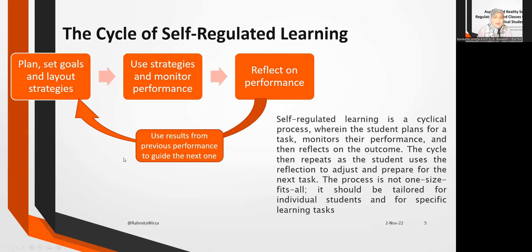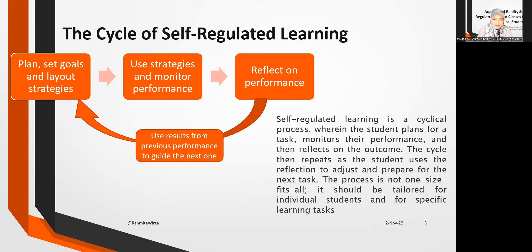For the cycle of self-regulated learning, students have to plan, set goals and layout strategies, then use strategies and monitor performance, and finally reflect on performance. From these reflections, they use results from the previous performance to guide the next one. They understand the strategies, understand their ability, and use these to guide the next cycle.